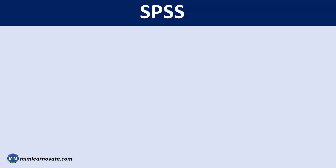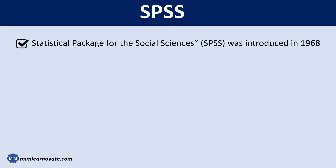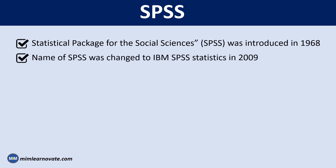What is SPSS? The Statistical Package for the Social Sciences, SPSS, was introduced in 1968. The official name of SPSS was changed to IBM SPSS Statistics in 2009 after IBM bought SPSS. However, it was discovered that a lot of people still just called it SPSS.